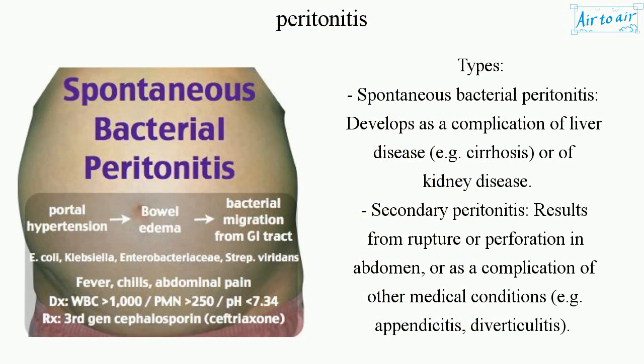Types. Spontaneous bacterial peritonitis develops as a complication of liver disease, e.g. cirrhosis, or of kidney disease.